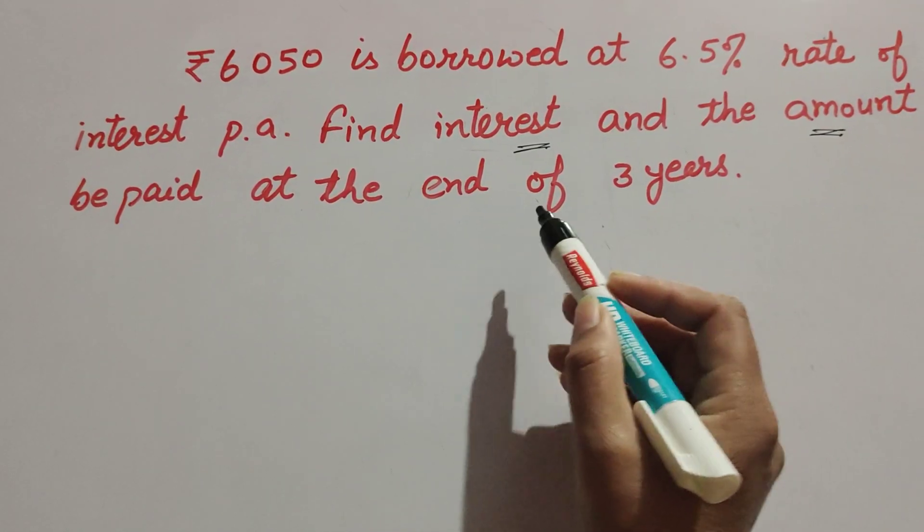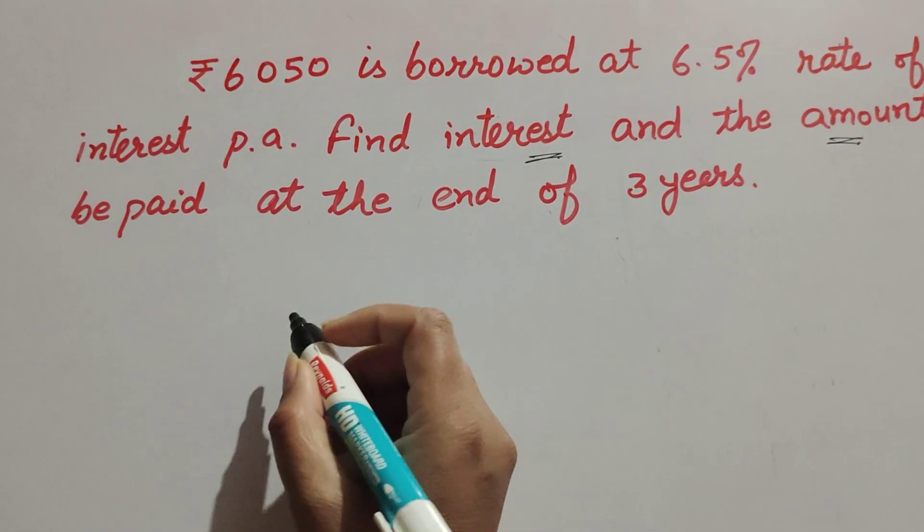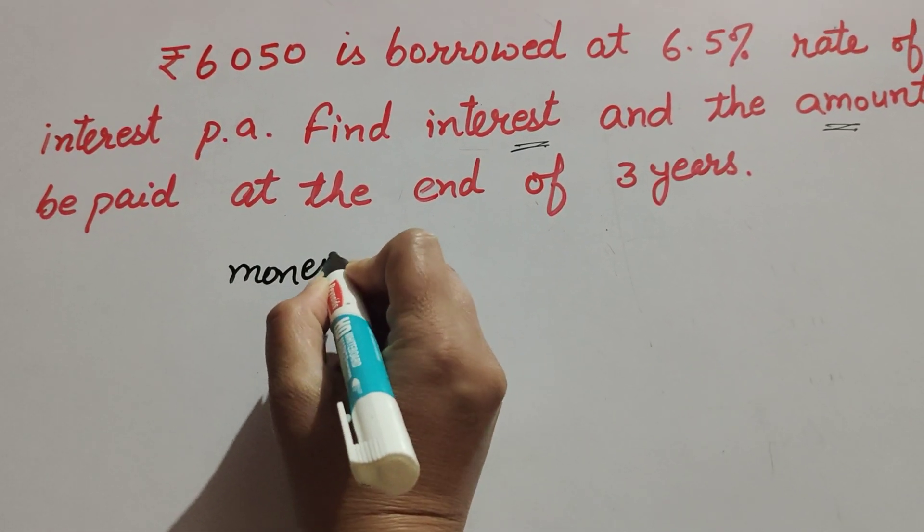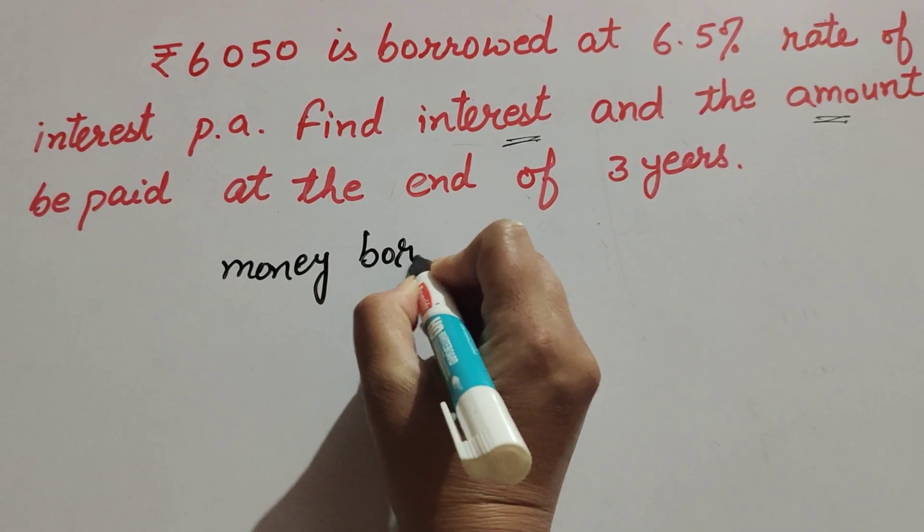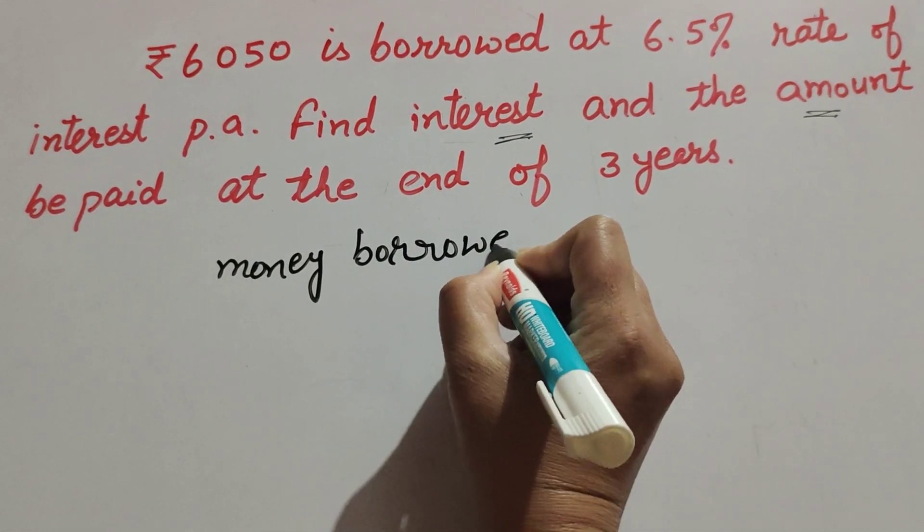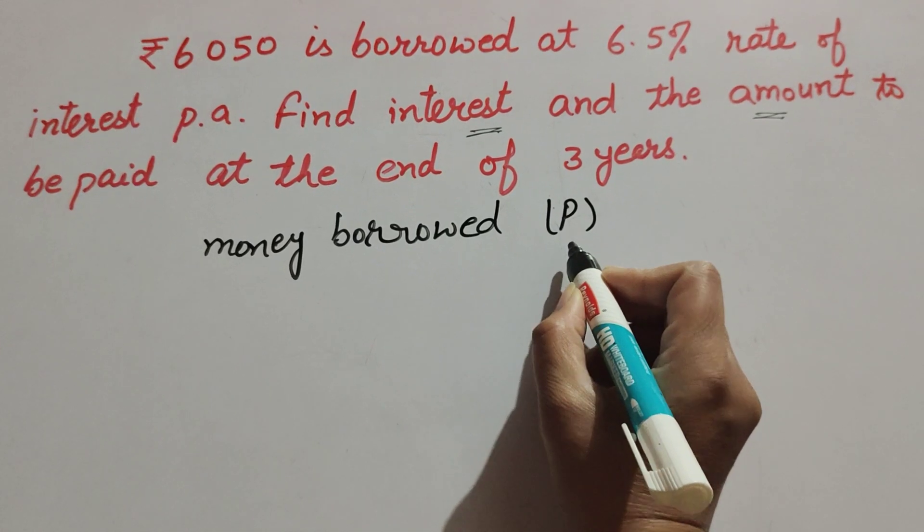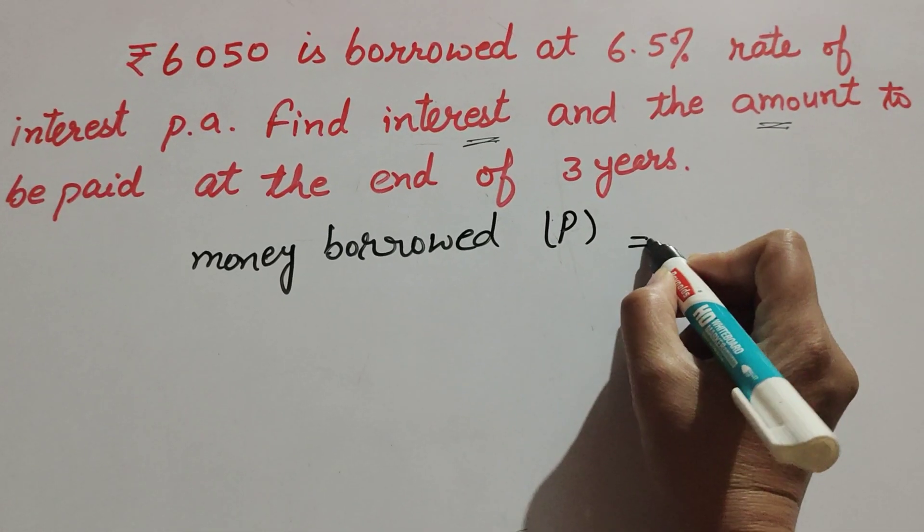We find the total amount that has to be returned after three years. Money borrowed, the principal P, is equal to rupees 6050.